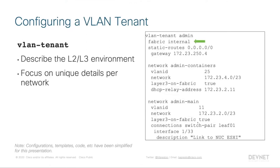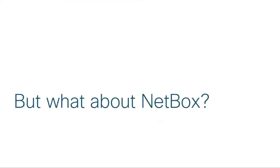Our VLAN tenant describes the layer two and three network areas. A VLAN tenant exists on some VLAN fabric — in the slide, the green arrow points to 'internal,' so our admin tenant exists on our fabric called internal. It includes details about static routing, network layers, VLAN IDs, prefix information, and physical network connections. This is what the network configuration looks like as it gets pushed out — we're not drilling into device-level configs; all configs are managed like this.